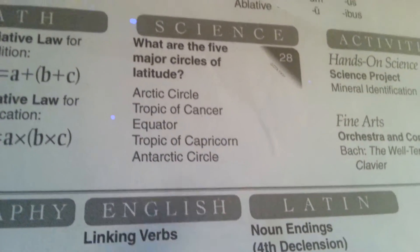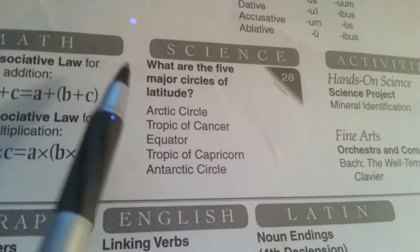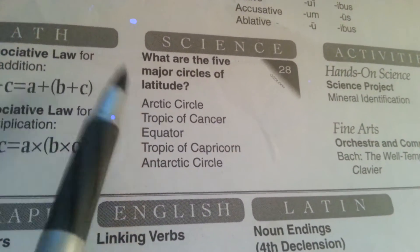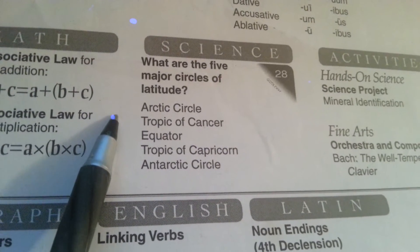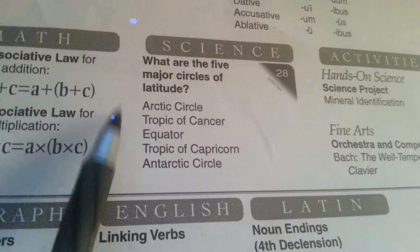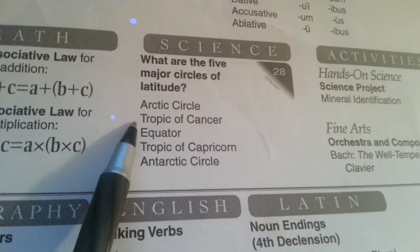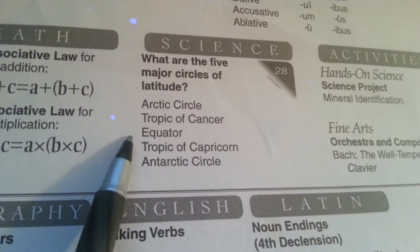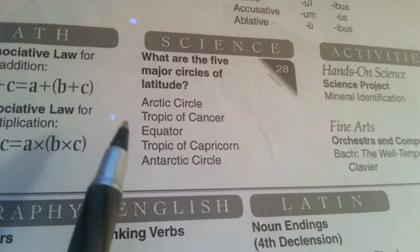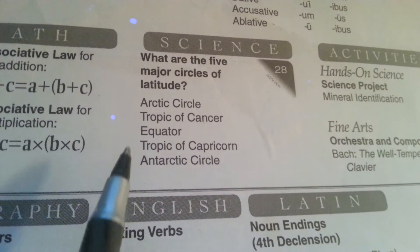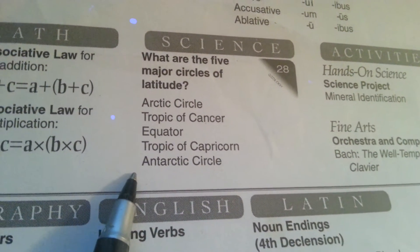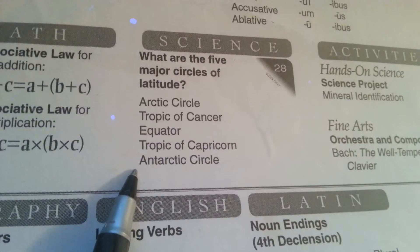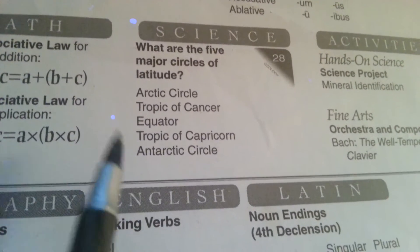What are the five major circles of latitude? Arctic Circle, Tropic of Cancer, Equator, Tropic of Capricorn, Antarctic Circle — five circles of latitude.